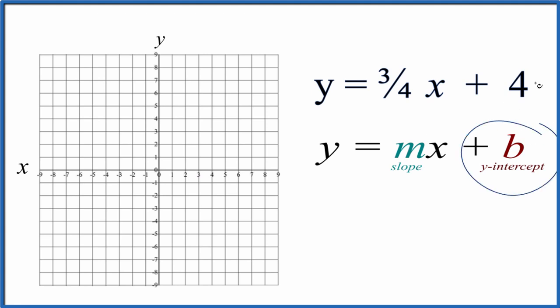So the y-intercept, that's four. So we're going to go over to the y-axis and we go one, two, three, right there, four. That's where we're going to intercept the line. It'll intercept the y-axis at the y-intercept.